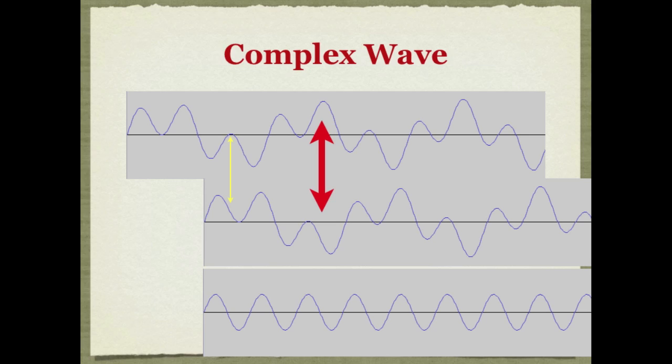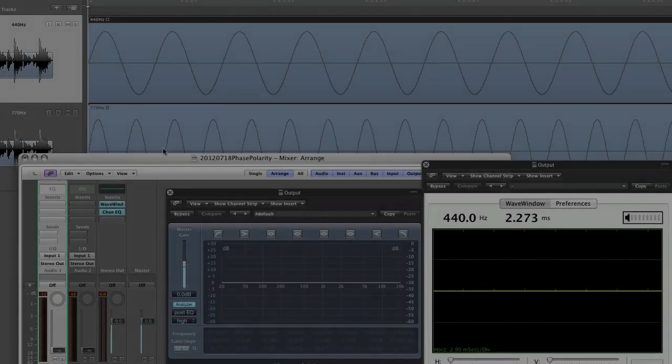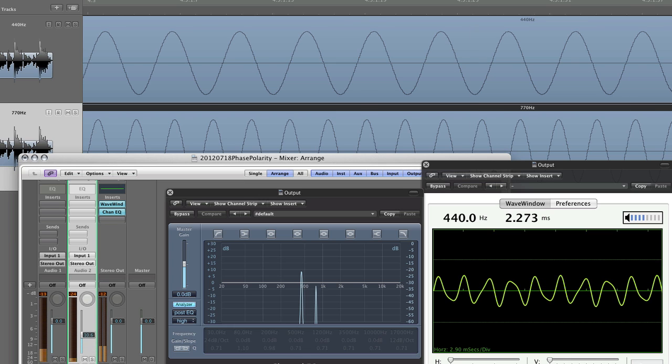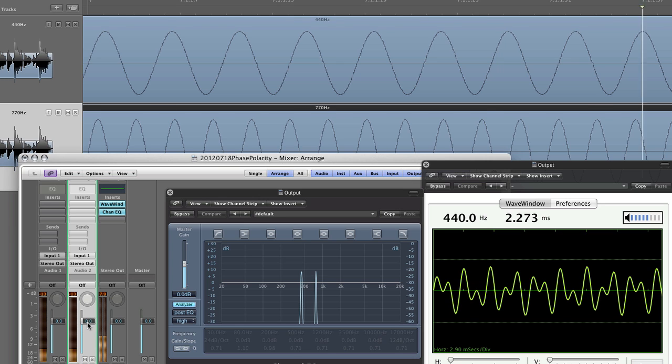Here's another example of that that you can see and hear. Let's make our complex wave from scratch so you can see. I've got two simple waves, 440 Hz and 770 Hz. If we play them together, let's bring in the 440 and bring in the 770. Now you can see on the spectrum analyzer, there's two ingredients to this wave. And you can see on the oscilloscope, that's the complex shape that comes up when you mix these two simple shapes together.